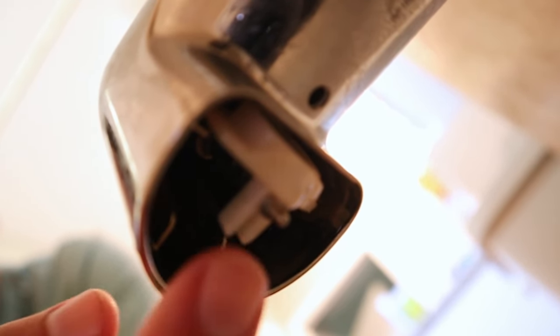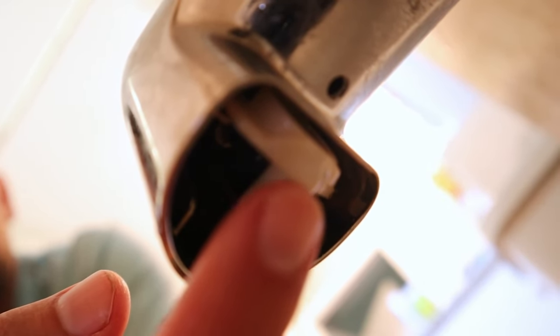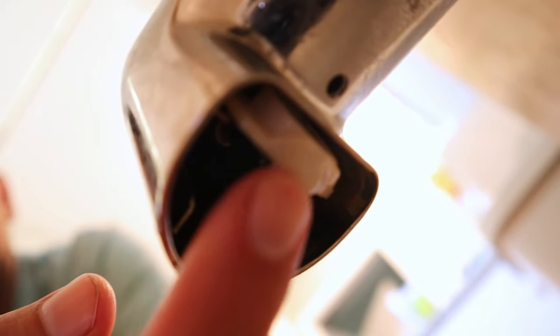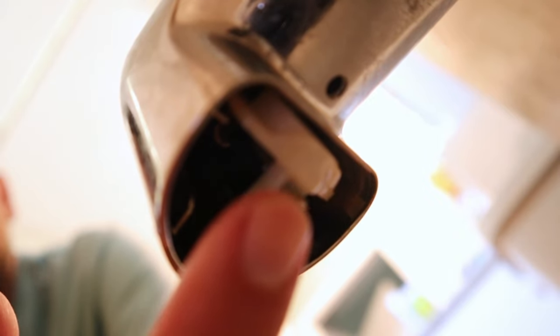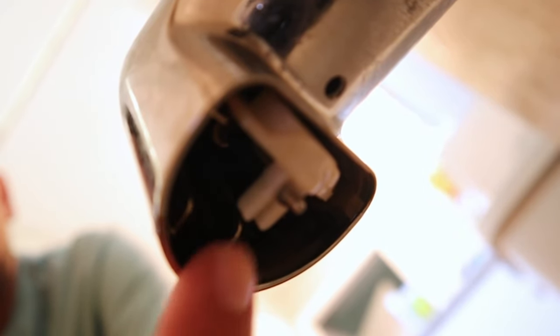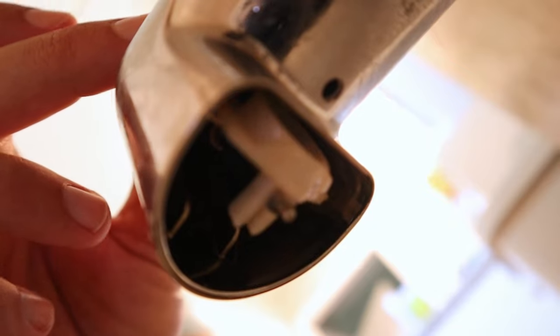I'm going to attempt to show you what needs to be fixed here. If you see this little white plastic piece here, this is called the gate. This is what actually diverts the water so that it doesn't continue to come out of the spout when you pull up on the post.